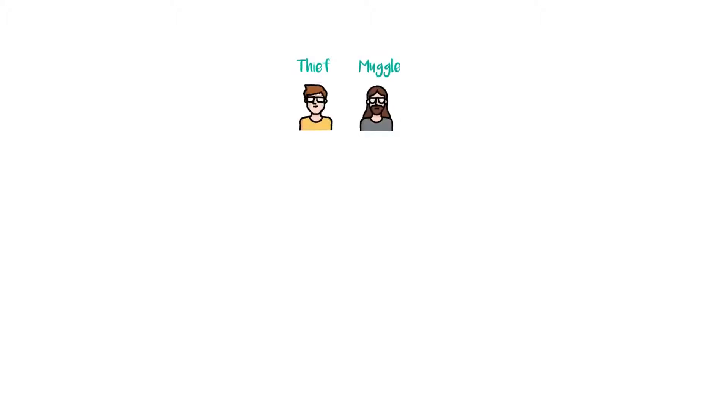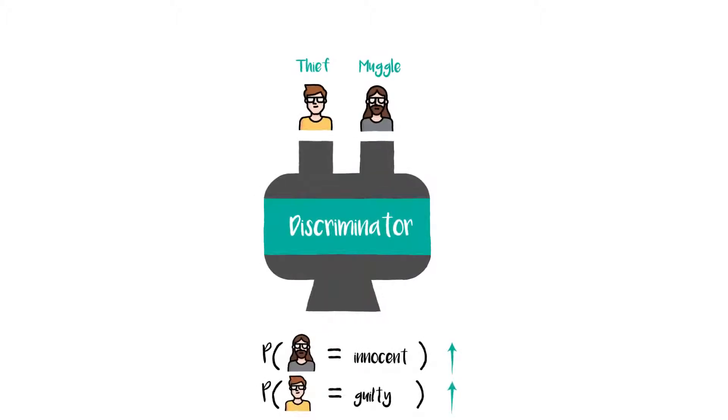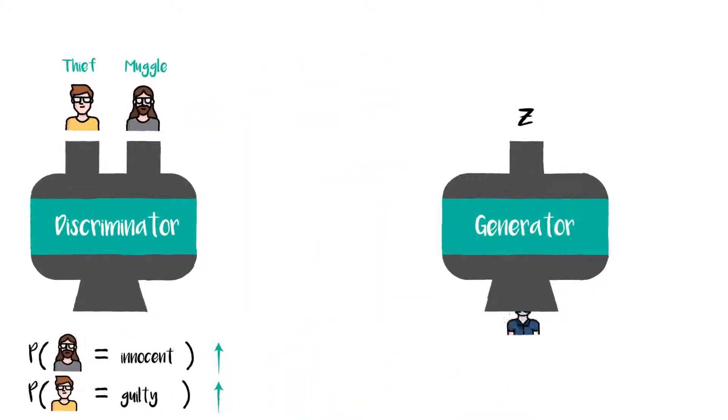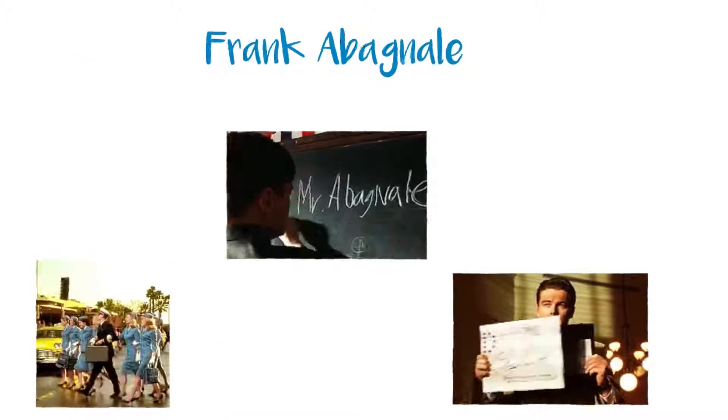We push both innocent muggles and thieves through the model, which makes it more confident about its predictions. The generator has to create better and better thieves, like counterfeiting currency.